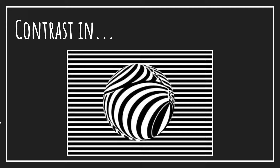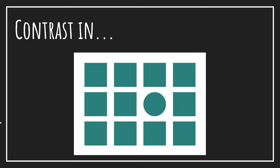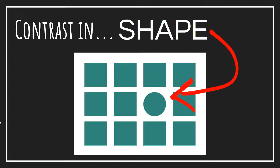For this example right here, we have contrast in which art element? Hopefully you said line, because that's what it is. We have these nice straight lines and then we have these curved lines, and it's the contrast between those two different types of lines — not the color, because we still have black and white here — but it's the contrast between these two types of lines that makes us able to see that shape, that circle in the center. For this one, we have contrast in shape. All the shapes are squares except for this one shape, which is a circle. All of them are the same, but one is different, so we have contrasting types of shapes.